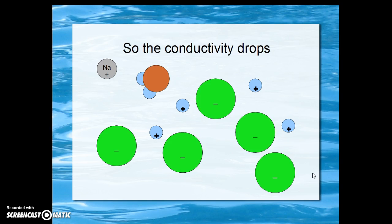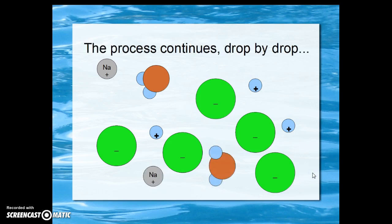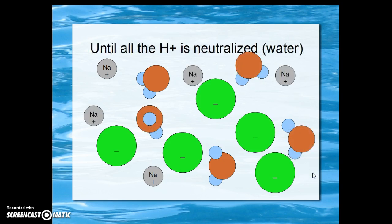So the conductivity will go down. The process continues drop by drop, hydrogen ion by hydrogen ion, until all the hydrogen ions have been neutralized by hydroxide and all the hydrogen ions have been replaced by sodium ions.